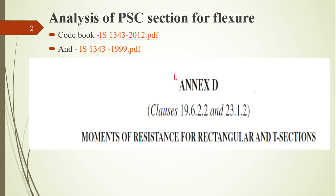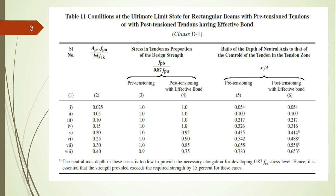Recall that in Annexure D there is a formula to calculate the moment of resistance for a rectangular and a T-section, when the neutral axis lies in the flange for a T-section. You have to refer the codebook IS 1343:2012, page number 51, Annexure D. There is a formula for moment of resistance as well as Table 11, which you have to refer to find out the value of f_pb and x_u.